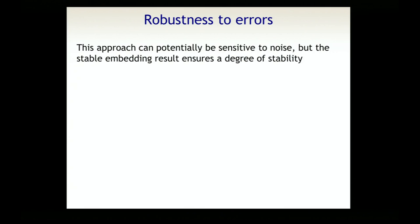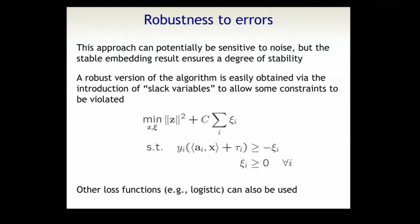One thing I like about the convex optimization approach is that it's extremely simple to make robust to noise. If you have some errors, you just introduce slack variables and get something that looks like an SVM, which is pretty easy to work with.